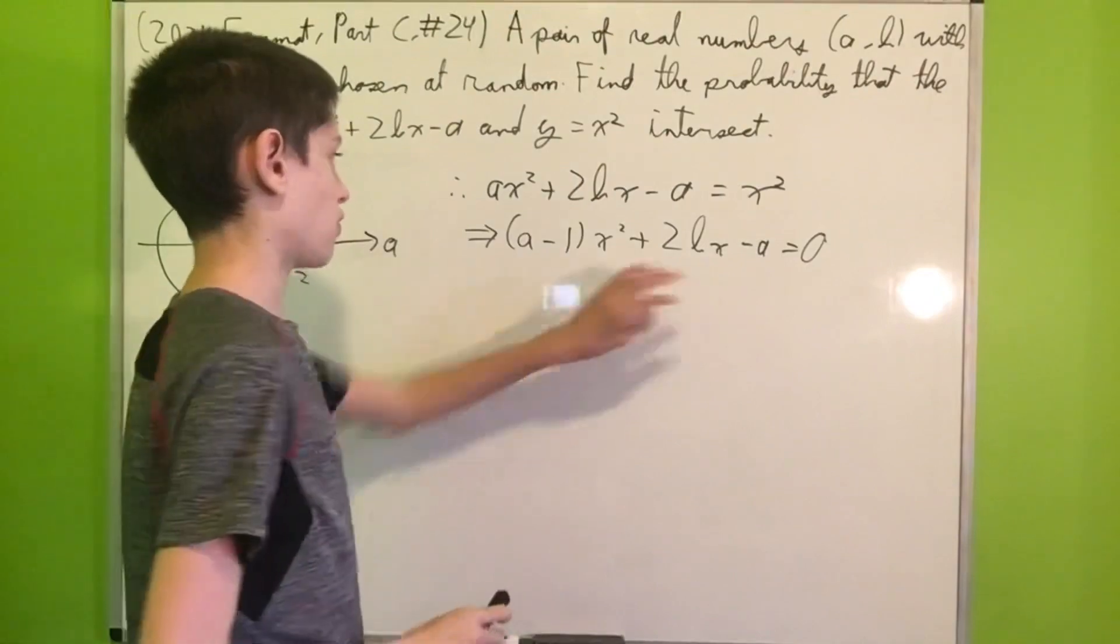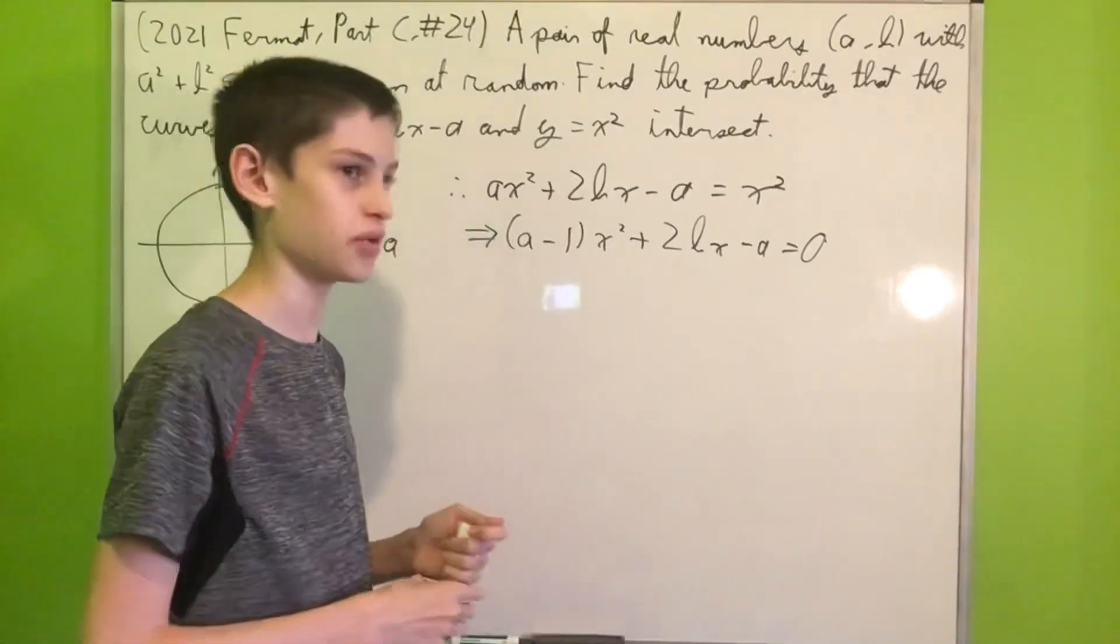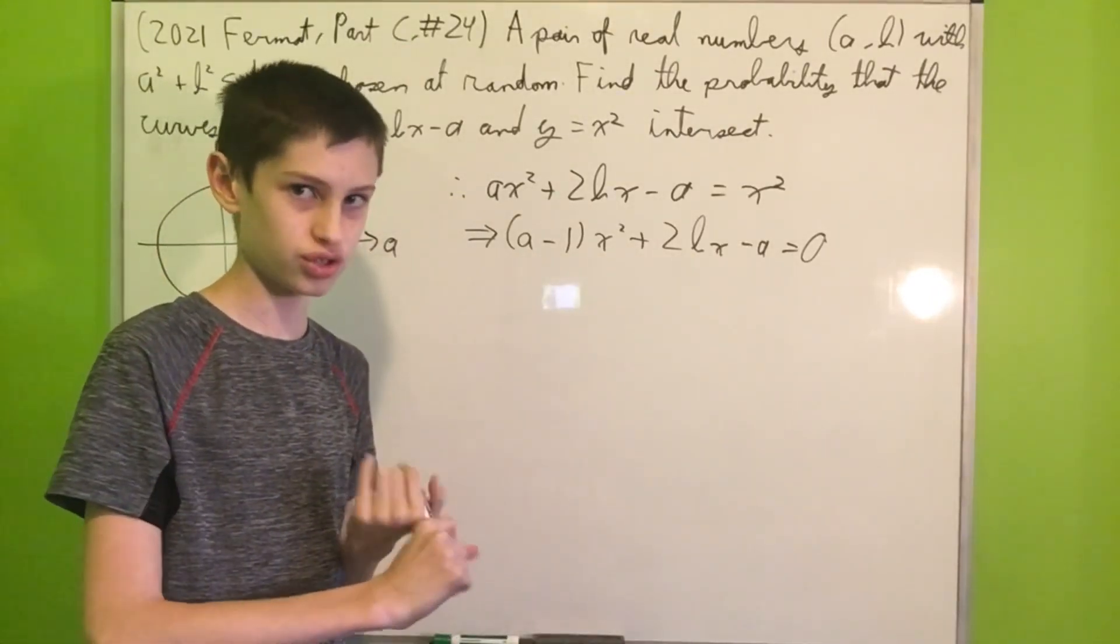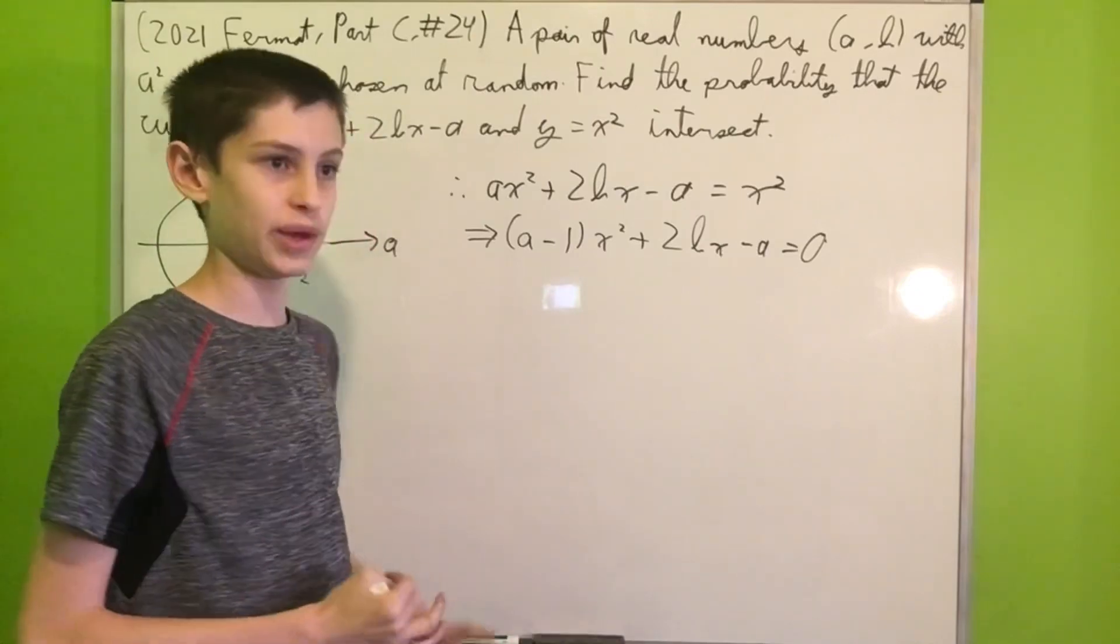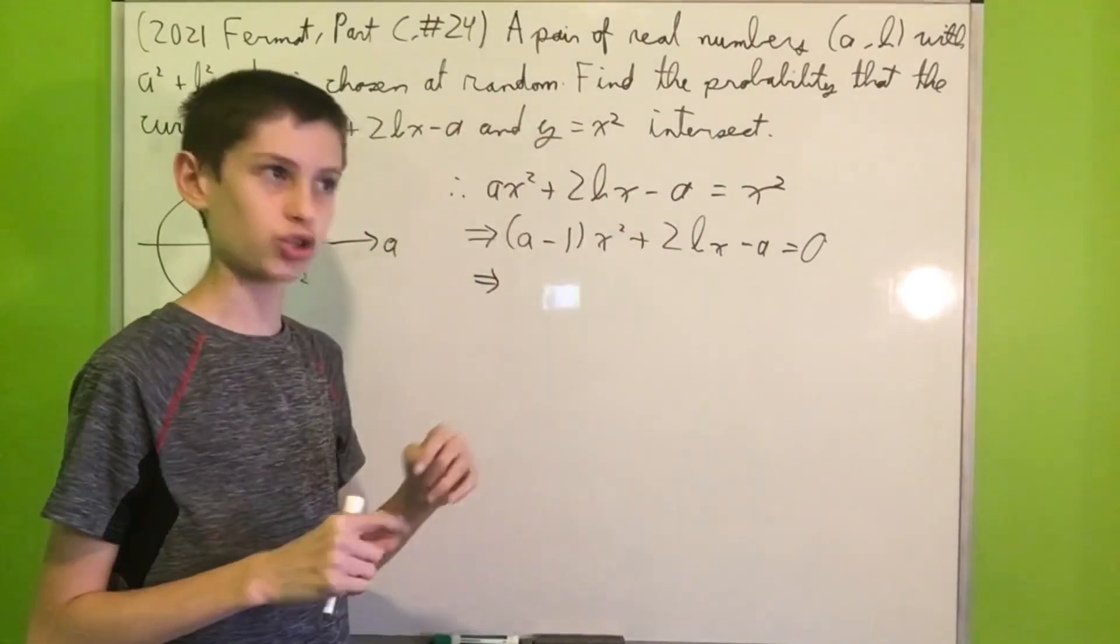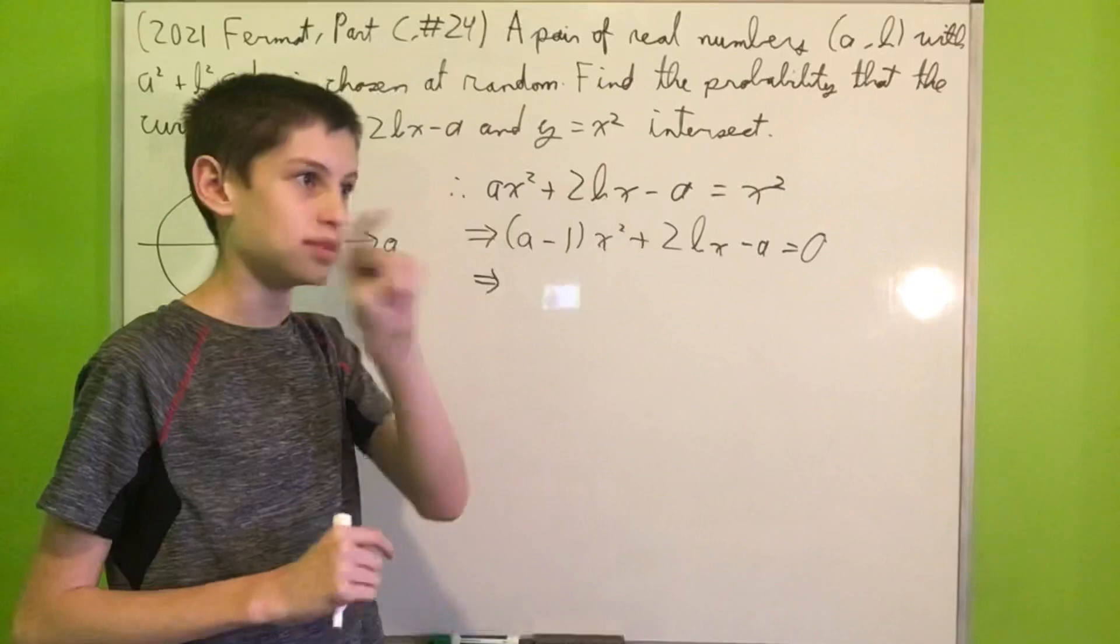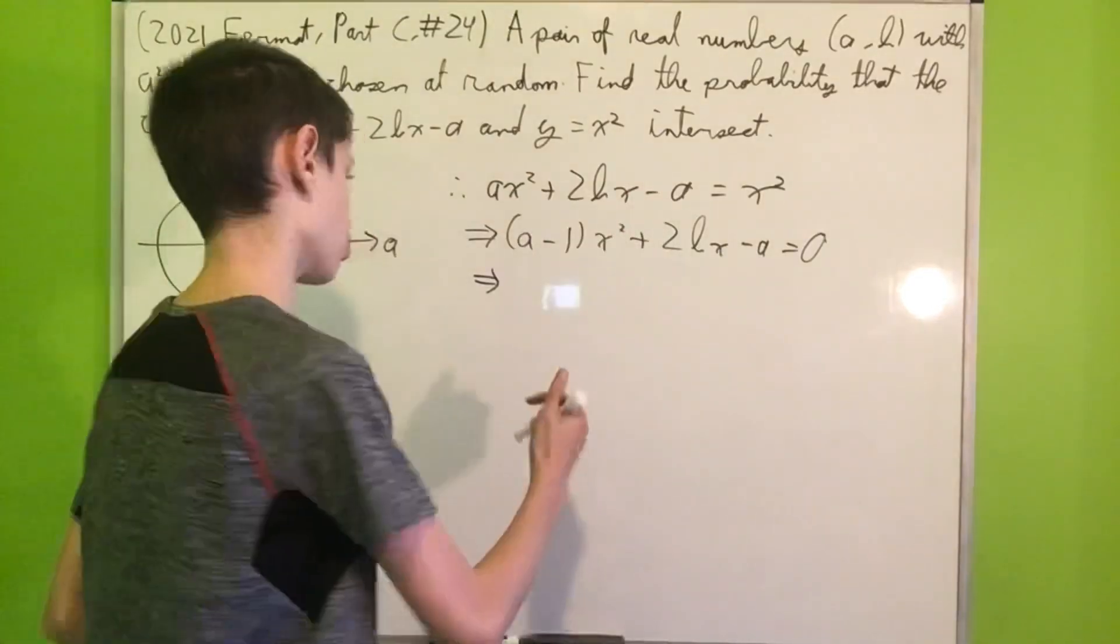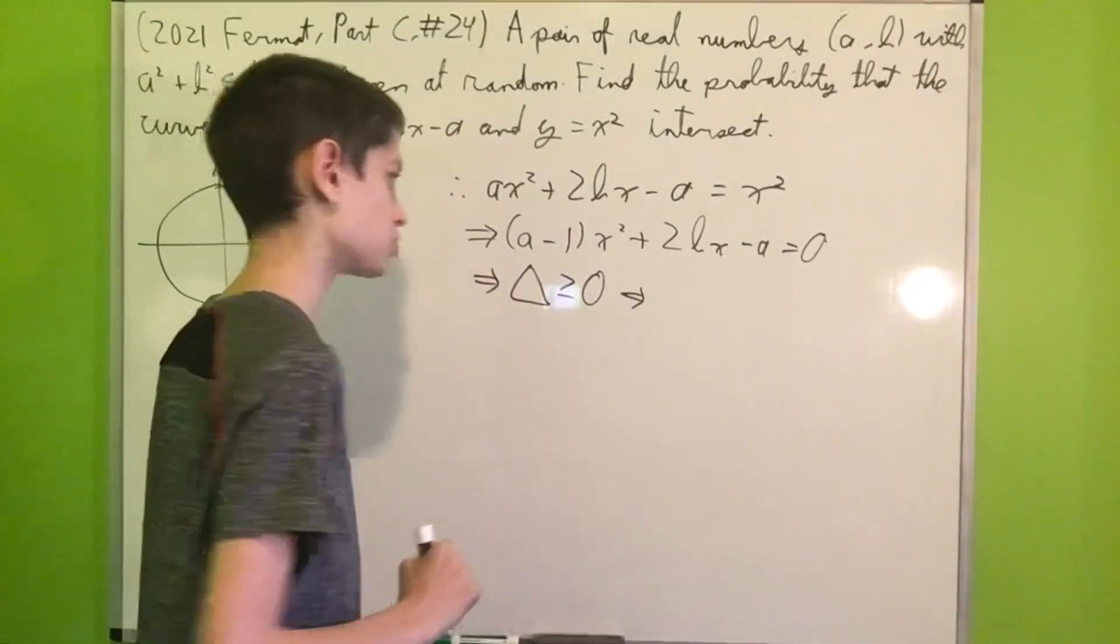And now, for these two curves to intersect, this quadratic, this will be our x coordinate for the point at which they will intersect. We either need either one repeated real root or two distinct real roots. And since 2b is obviously real, that means the discriminant, meaning like the b² - 4ac part in the quadratic formula, must be greater than or equal to 0, because if it's equal to 0 we'll have just the -b/2a thing, and if it's greater than 0 we will obviously have two real roots.